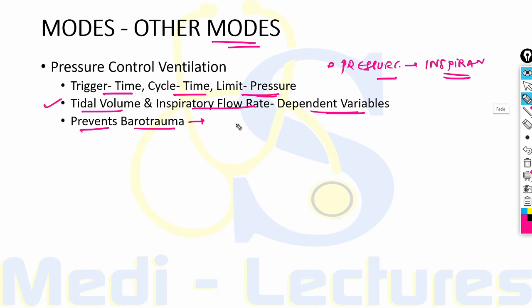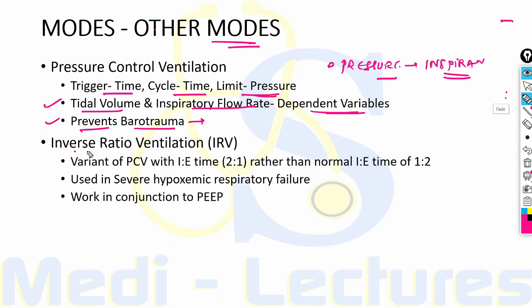Inverse ratio ventilation is a variant of pressure control ventilation in which the inspiratory-to-expiratory ratio is prolonged to 2:1 rather than the normal 1:2. Due to this longer inspiratory phase, it is used in patients with severe hypoxemic respiratory failure. It increases distending pressure without increasing peak airway pressure.